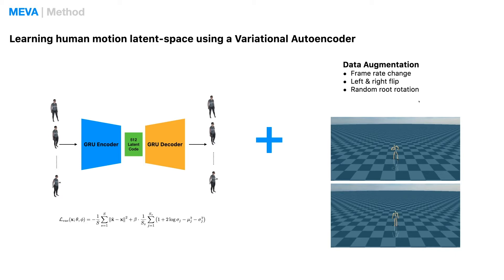Thus, ample data augmentation, such as flipping the motion left and right, spinning it up and down, is used to help the model adapt to unseen motion sequences. Notice that this VAE processes 90 frames of motion at a time.